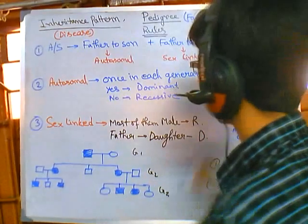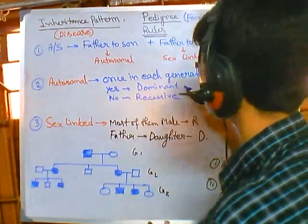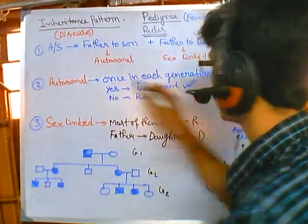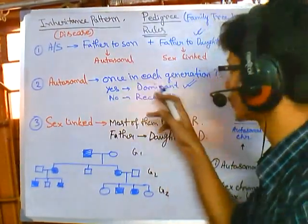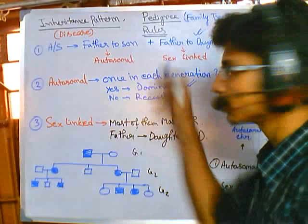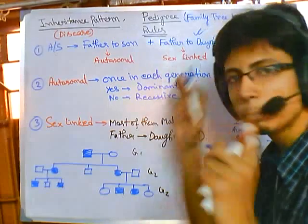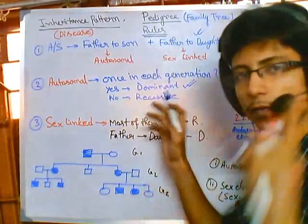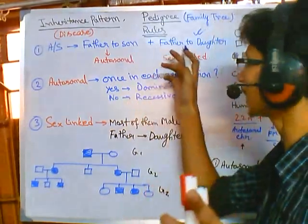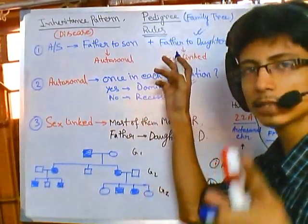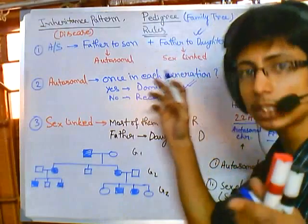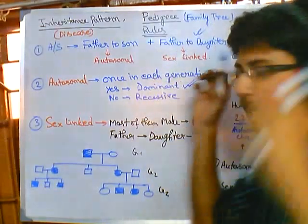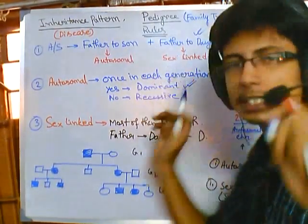That is the empirical rule — that is the true rule, applicable all the time. This rule is true all the time. And if the trait comes in each generation, it should be dominant. These two rules are empirical. If you find the disease gene transferring from father to daughter, you can say with confidence it is sex-linked.